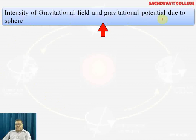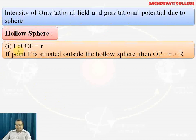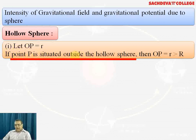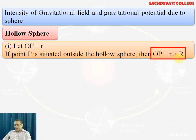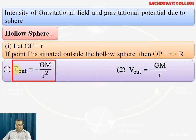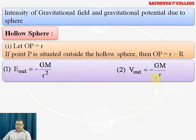The gravitational field intensity and gravitational potential can be related. For a hollow sphere, if point P is outside the sphere at distance r > R (the sphere's radius), the gravitational field intensity outside is -GM/r² and the gravitational potential outside is -GM/r. The intensity can be expressed as V/r, where V is the potential.